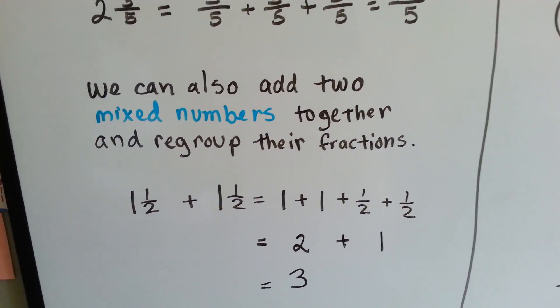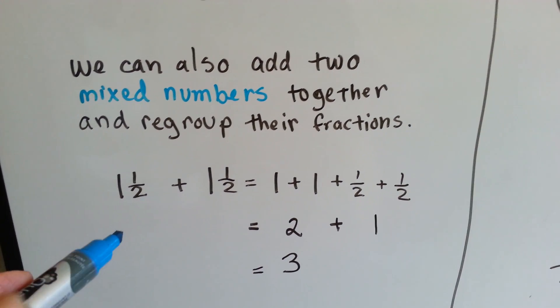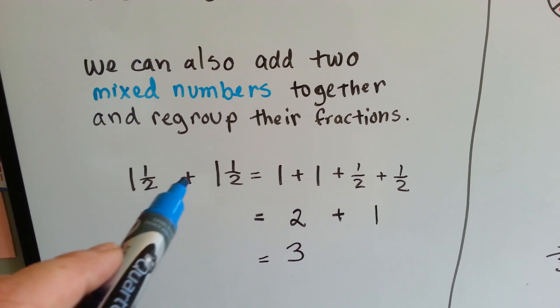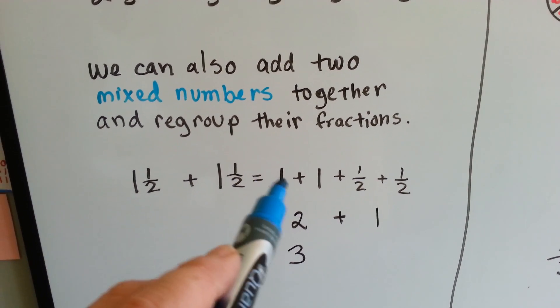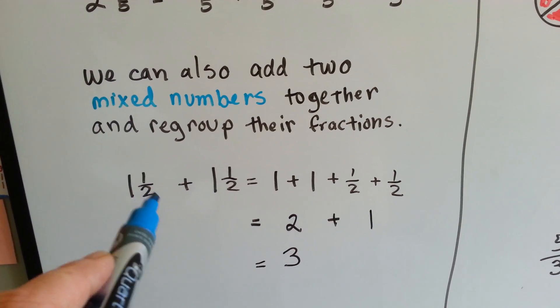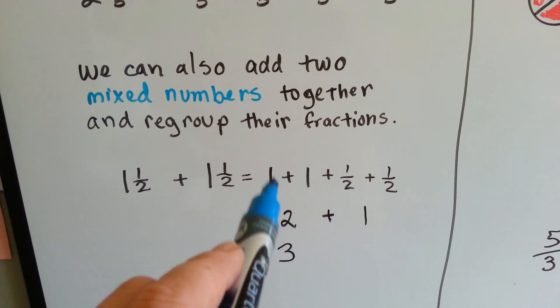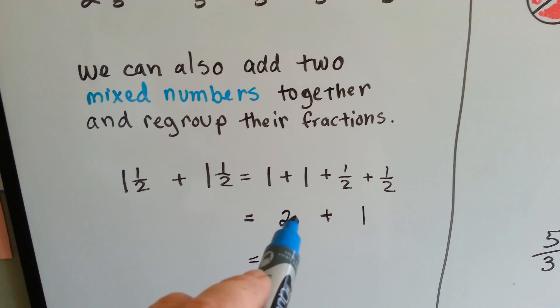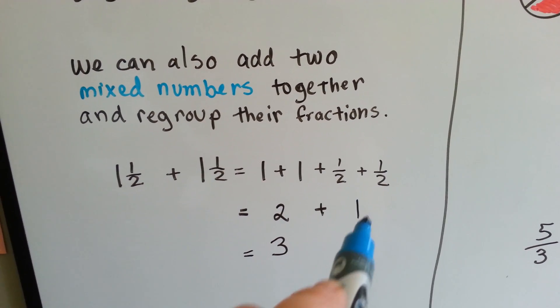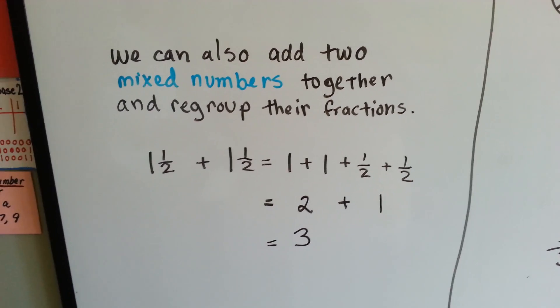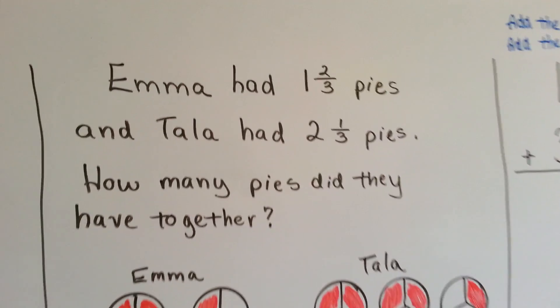We can also add two mixed numbers together and regroup their fractions. If you have 1½ plus 1½, you have a whole one and another whole one, and then you have a half and a half. 1 plus 1 plus ½ plus ½. 1 plus 1 is 2 and ½ plus ½ is 1. That gives us 3. 1½ plus 1½ is 3.